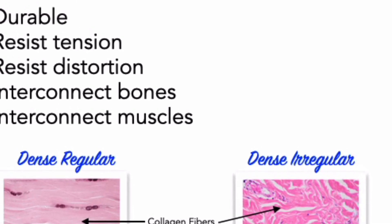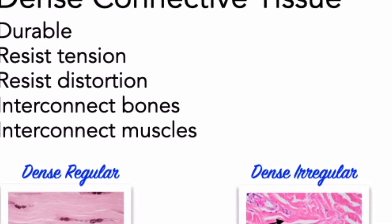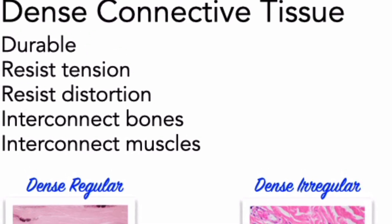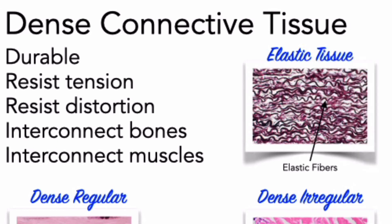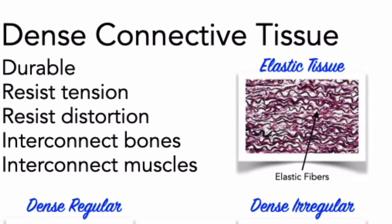On the subject of dense connective tissue, it is worth noting elastic tissue. Elastic tissue is a dense regular connective tissue made up mainly of elastic fibers. Elastic ligaments are almost completely dominated by elastic fibers; they help stabilize the positions of vertebrae of the spinal column.